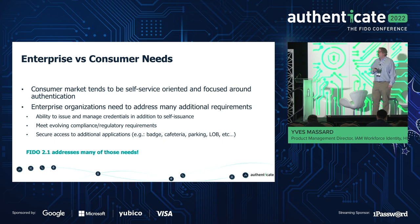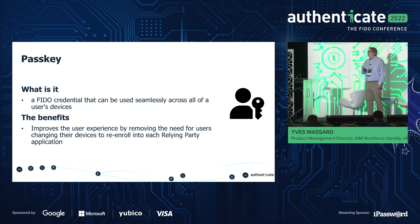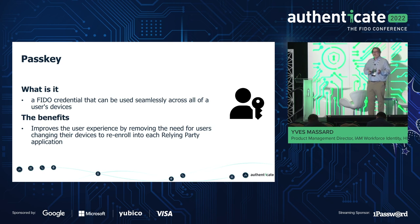The good news is that FIDO 2.1 actually addresses many of those needs. First, let's talk about passkeys. Passkeys technically rely on the existing FIDO 2.0 and WebAuthn 2.0 foundation, but these changes are being implemented now and will have a direct impact for enterprise customers. A passkey is a FIDO credential that can be used seamlessly across all of a user's devices, and many of the consumer benefits also apply to enterprise organizations.